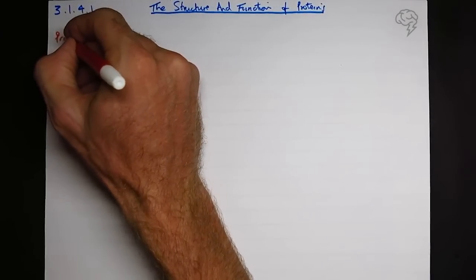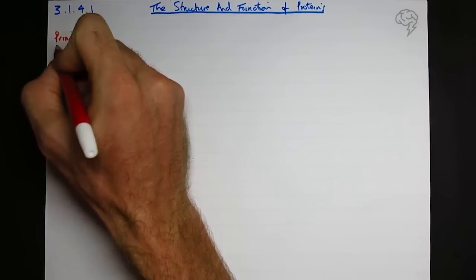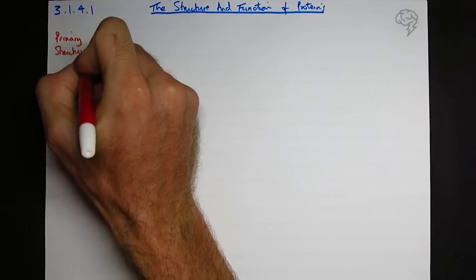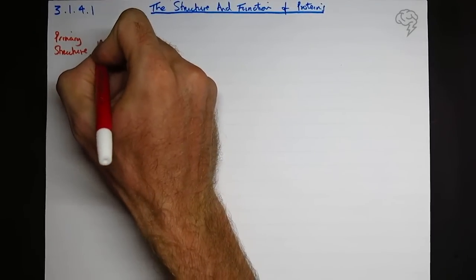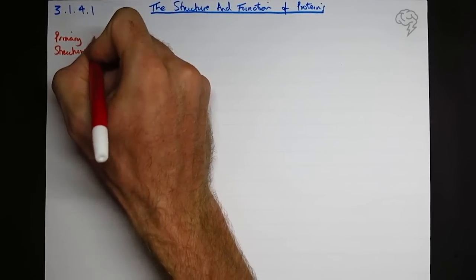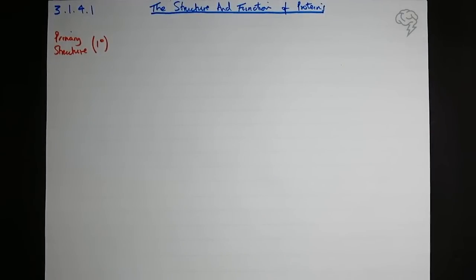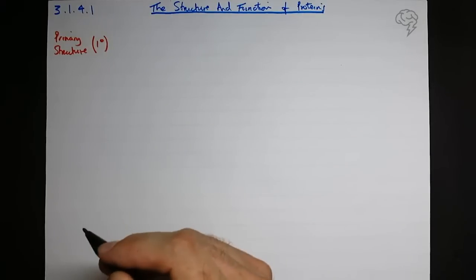They ask about this over and over again throughout the two years. Primary structure - now we can represent primary structure with this little symbol there, 1° and then the little circle after its superscript. So what is the primary structure of a protein?